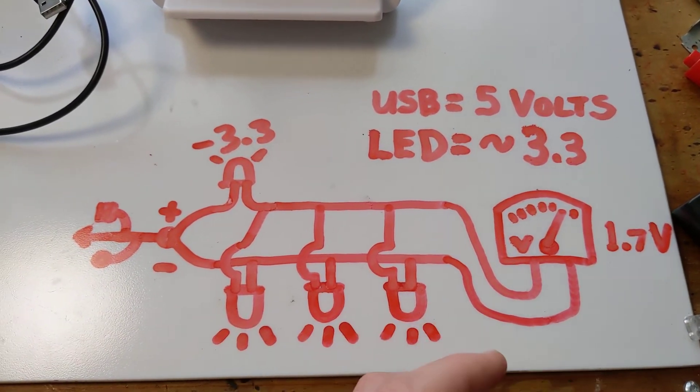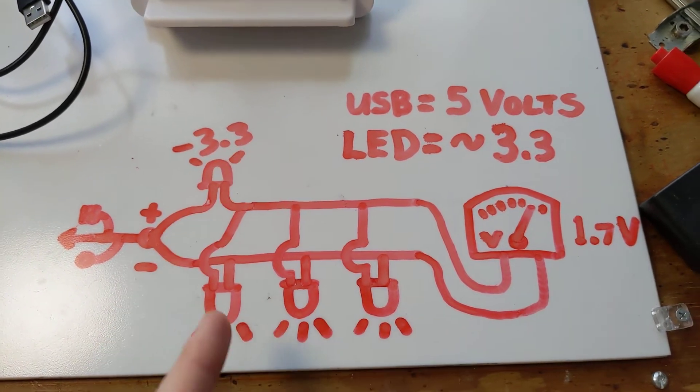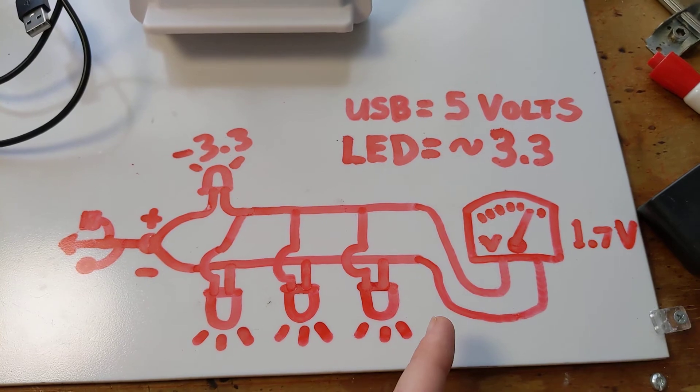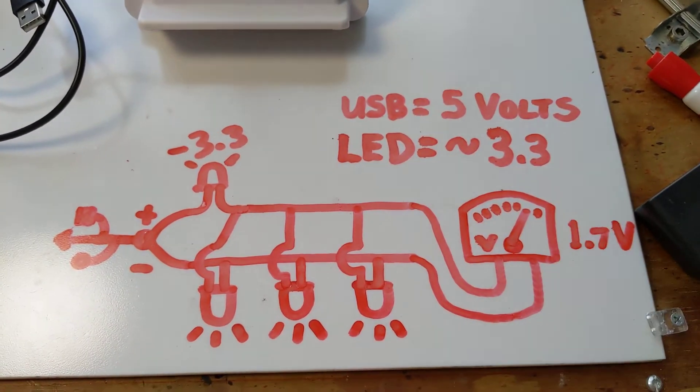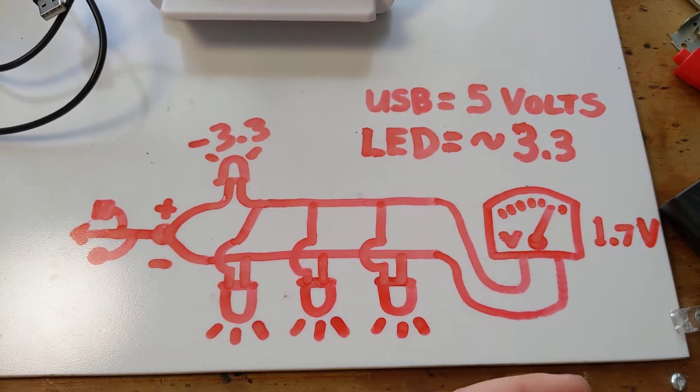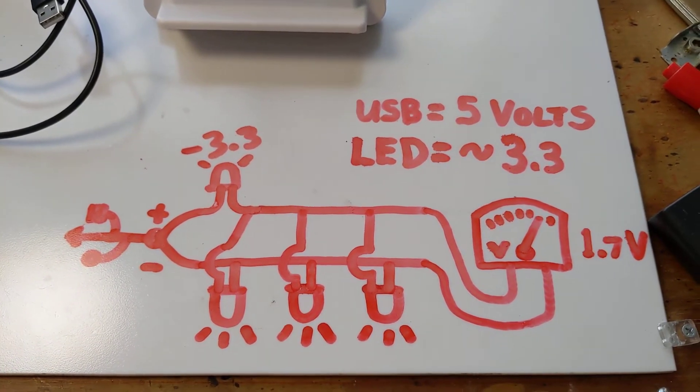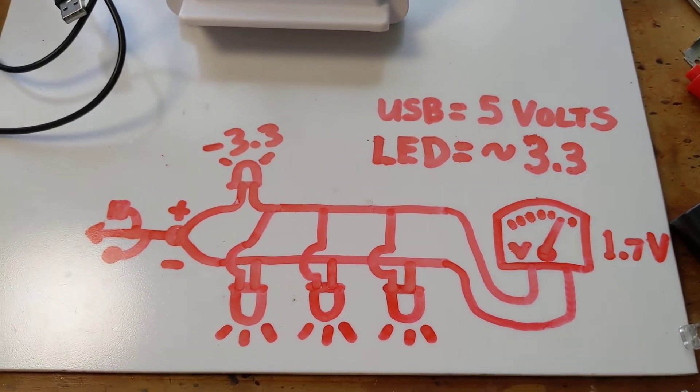so it's actually not a huge reduction. Now these LEDs, wired in parallel, are all going to get that 1.7 volts and they're going to draw as many milliamps as they need to produce their maximum brightness.